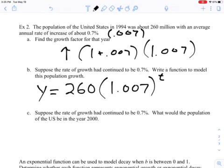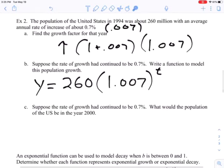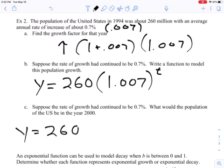Suppose the growth rate had continued to be 0.07%. What would the population of the U.S. be in the year 2000 using this model? All right, let's take a look at it. y equals 260 million times 1.007.